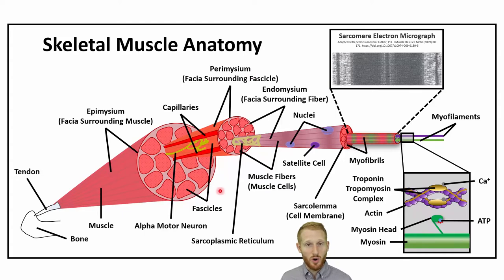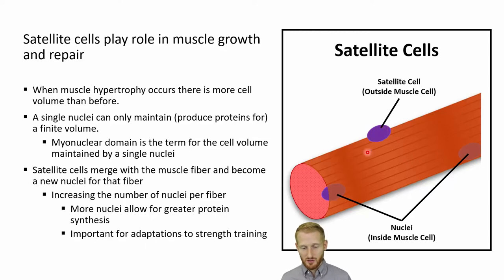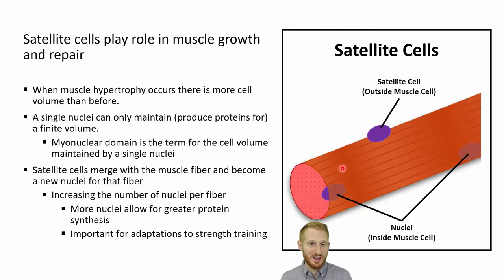Inside the actual muscle cell, right against the sarcolemma on the inside, we have the nuclei, where all the genetic material is stored. Outside the cell, we have satellite cells — they look about the same because they're essentially the same thing. The satellite cell will eventually become a nucleus. Satellite cells are very important for muscle growth, which is muscle hypertrophy — meaning the muscle cell getting bigger — and they're also very important for healing damaged muscle cells. If you get an injury or rip a muscle cell, satellite cells will often go into the muscle, become a new nucleus, and help repair that tissue.